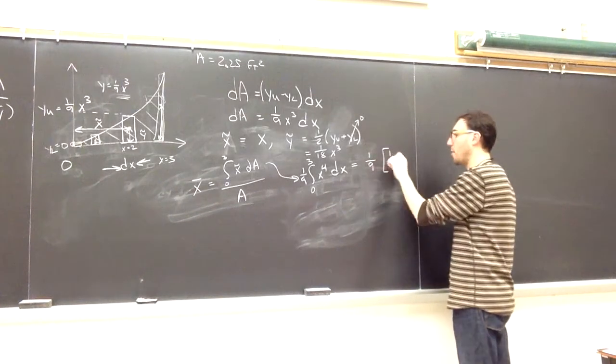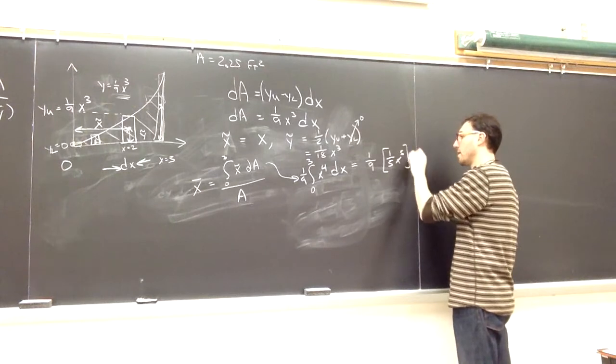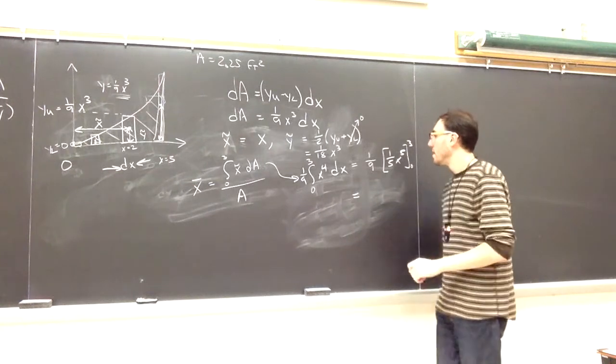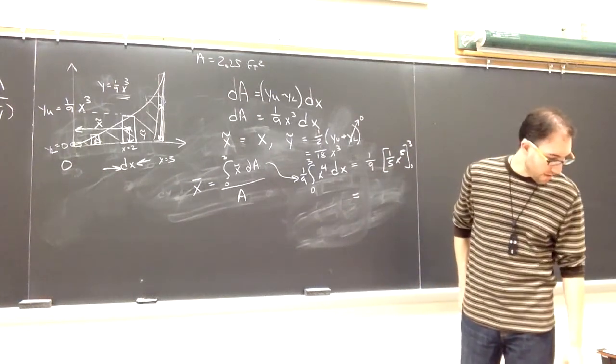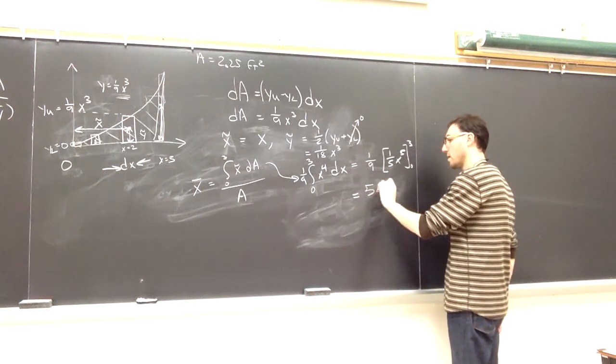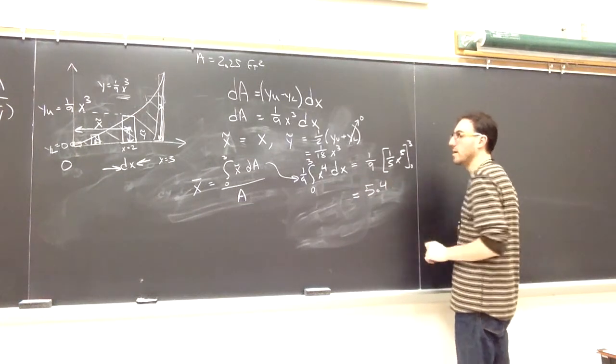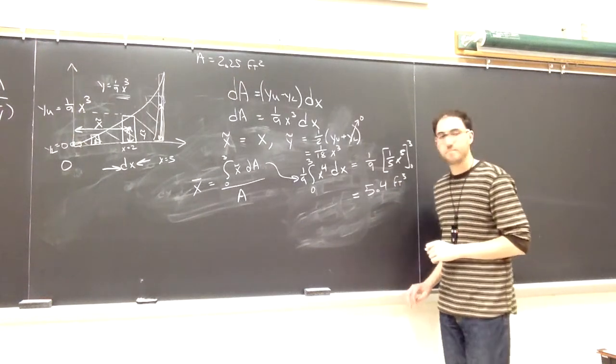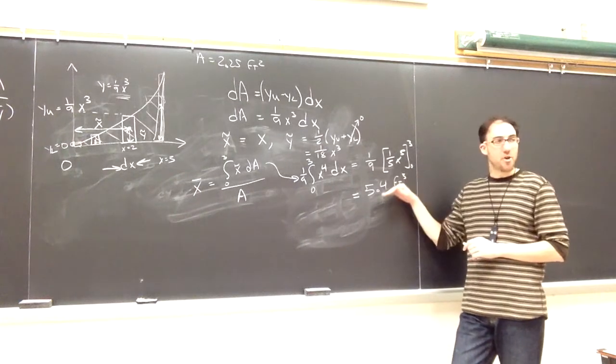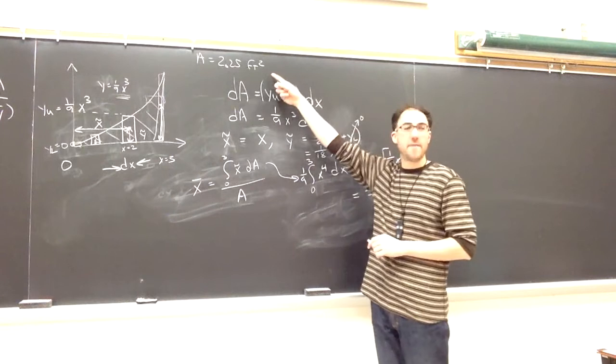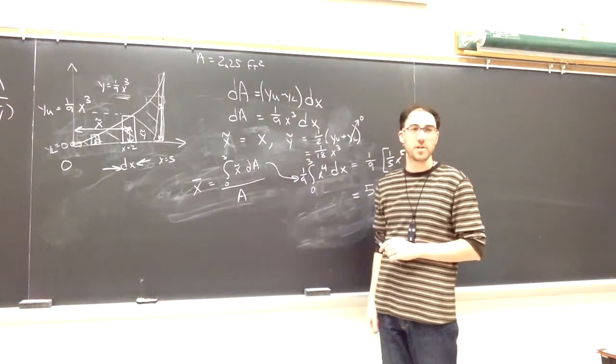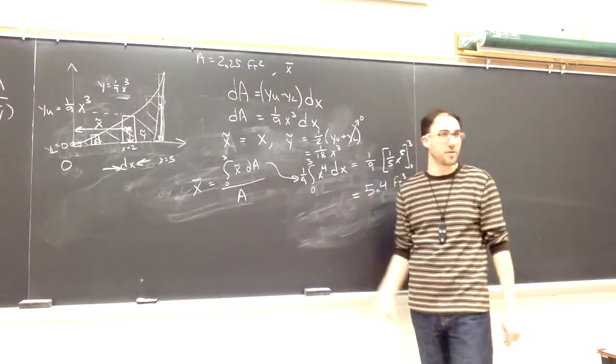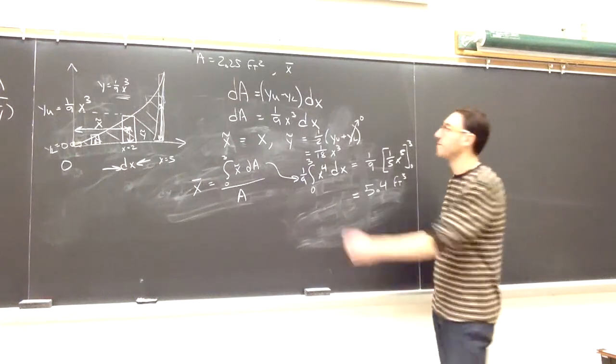If I take its antiderivative, I get one-fifth x to the fifth evaluated from 0 to 3. And then as a number, I get that that numerator is going to be equal to 5.4, and that's actually in feet cubed for the numerator. So again, the numerator is 5.4. In the previous step, I found the denominator A was 2.25. So I can find that x bar will be 5.4 divided by 2.25. So x bar is 2.4 feet.